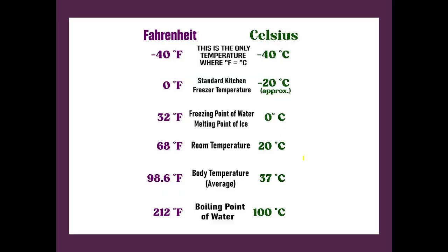Here are some famous reference temperatures. 0 degrees Fahrenheit is the freezer temperature, which is about minus 20 degrees Celsius. Then we have the freezing point of water, which is 0 degrees Celsius. Normal body temperature is approximately 37 degrees Celsius, which equals 98.6 degrees Fahrenheit. The boiling point of water is 100 degrees Celsius, which is 212 degrees Fahrenheit — try to verify all of these.